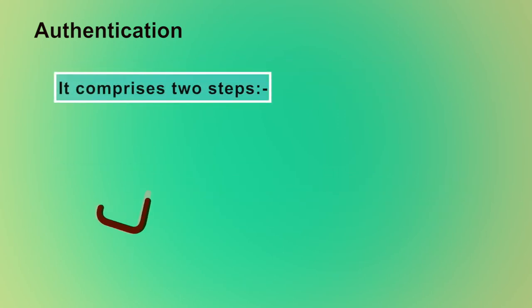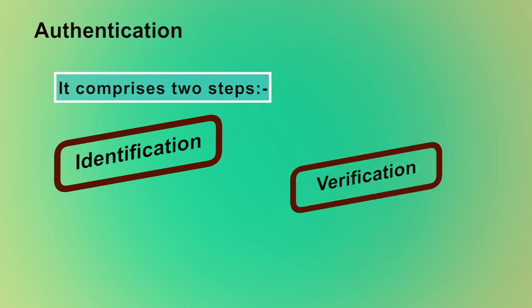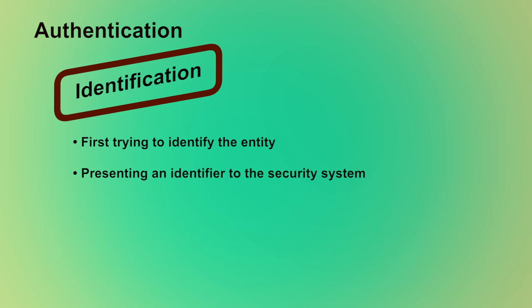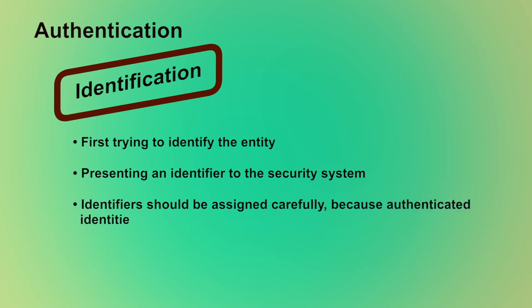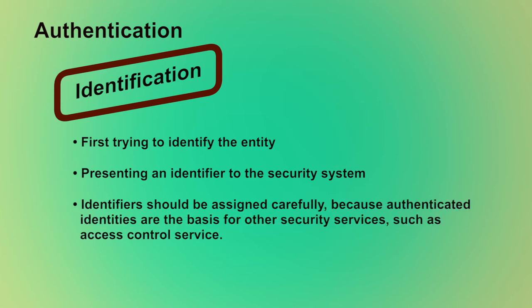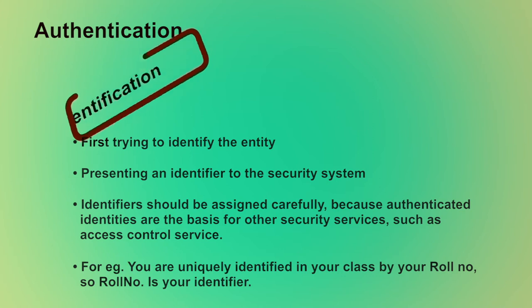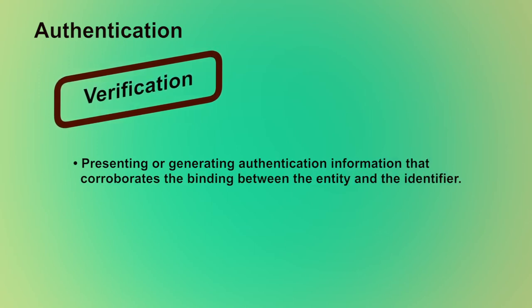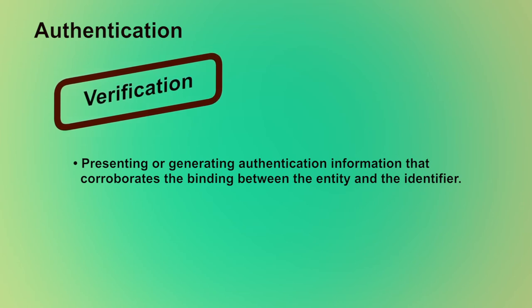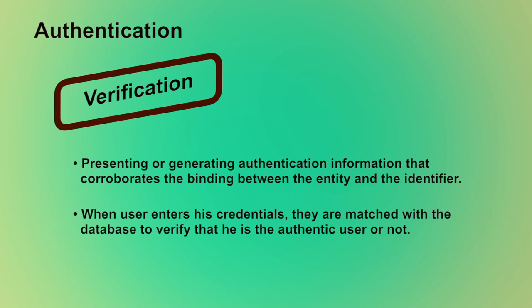An authentication process mainly comprises two steps: the identification step and the verification step. In the identification step, we are first trying to identify the entity by presenting an identifier to the security system. An identifier should be assigned carefully because authenticated identities are the basis for other security services such as access control. For example, you are uniquely identified in your class by your roll number, so the roll number is your identifier. The verification step involves presenting or generating authentication information that corroborates the binding between the entity and the identifier. When a user enters his credentials, they are matched with the database to verify that he is the authentic user or not.